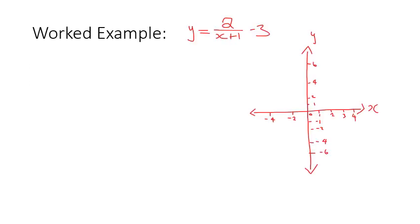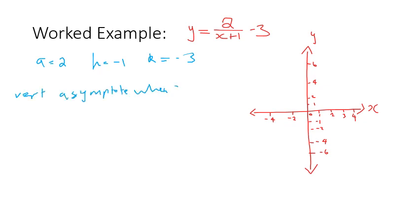For our worked example we have y = 2/(x + 1) − 3. First, we find our values: a equals two, h equals negative one, and k equals negative three. We can now use h and k to find our asymptotes. The vertical asymptote occurs when x equals negative one, and the horizontal asymptote occurs when y equals negative three.